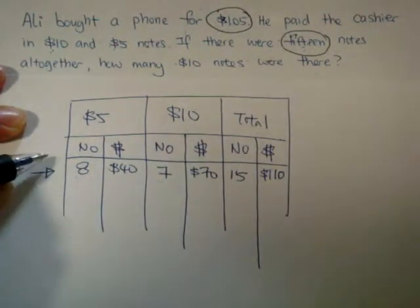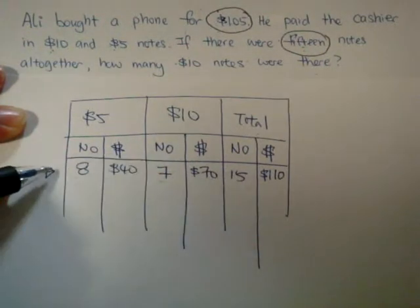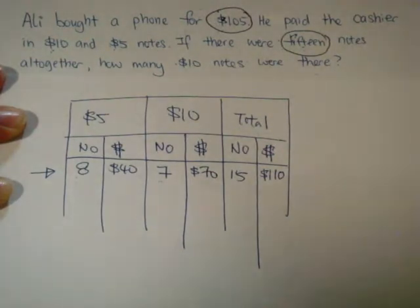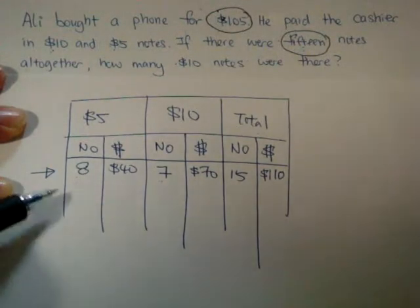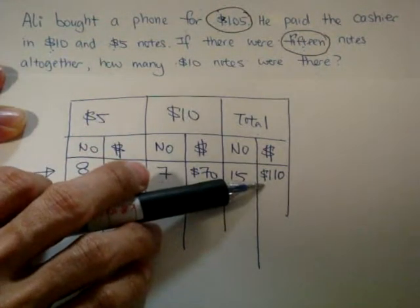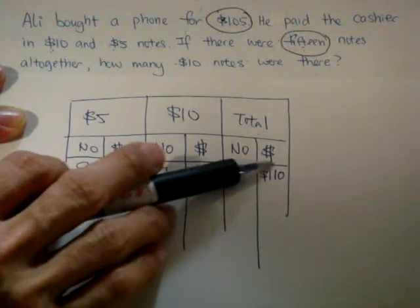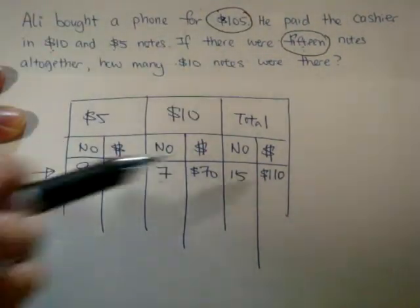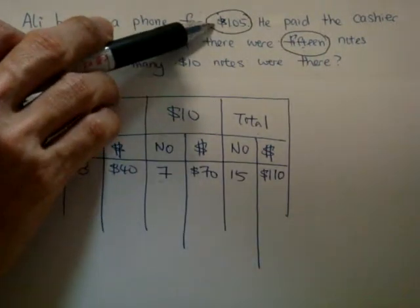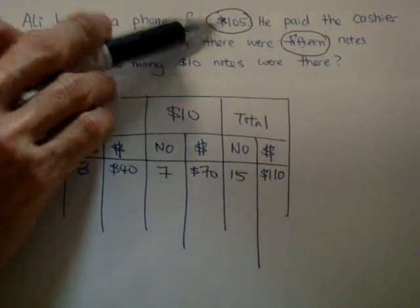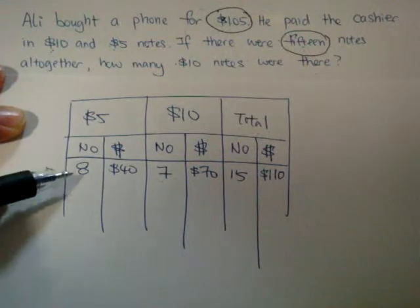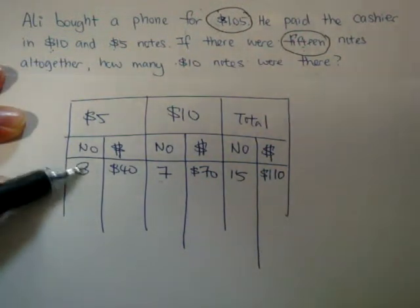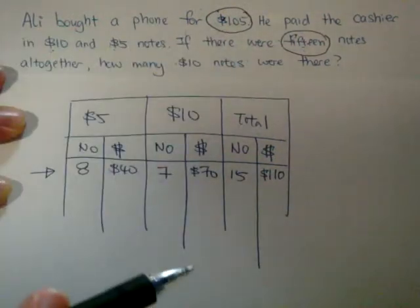After that, you don't just carry on to do the next guessing. Before you do the next guessing, observe the things. Look at this: 110 and 105 — it's very close to the actual answer. Which means that you don't have to make a great jump in the number, as you are very close to the answer.